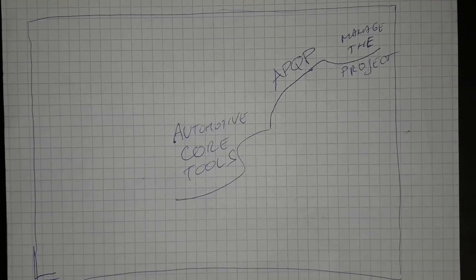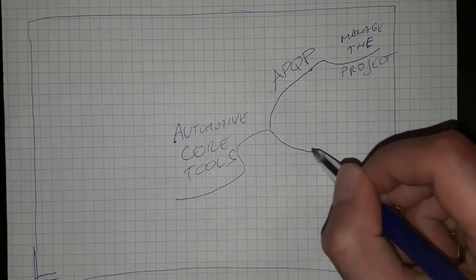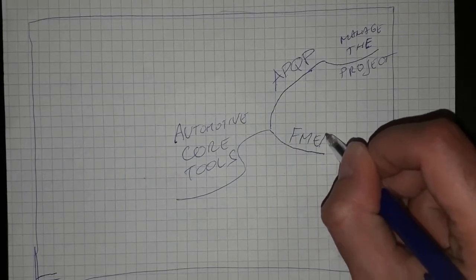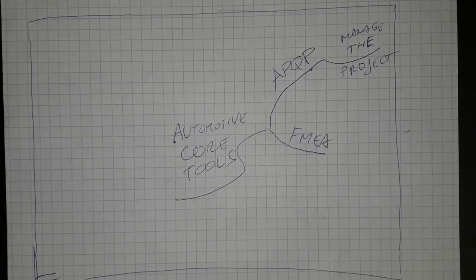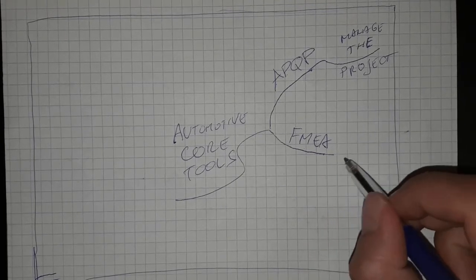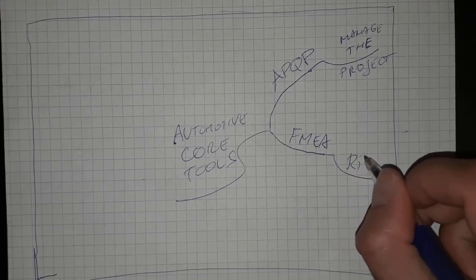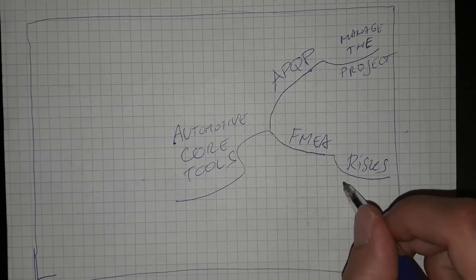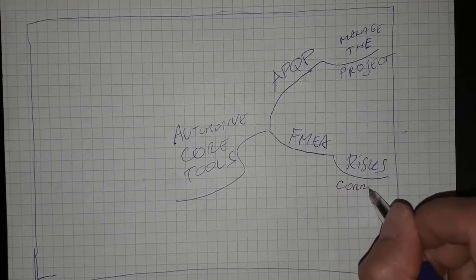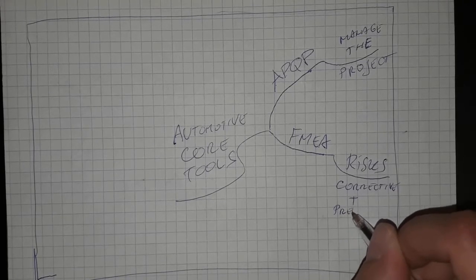When we are in the design phase, we want to make sure that we take care of all the risks. Therefore we use the next core tool, which is FMEA — Failure Mode and Effects Analysis. This considers the risks and the corrective and preventive actions.